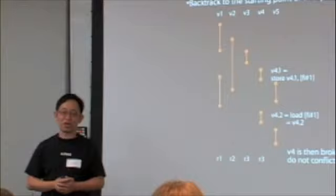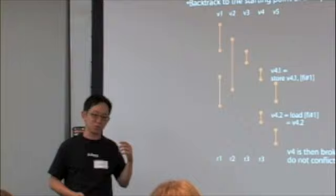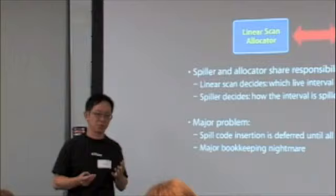Later on, we'll take another example to look at the issue with backtracking. So the linear scan and spiller kind of share the responsibility of spilling. The linear scan picks which life interval to spill.